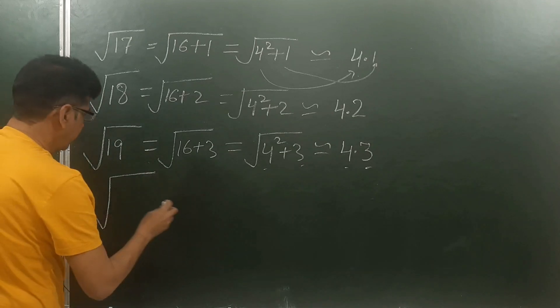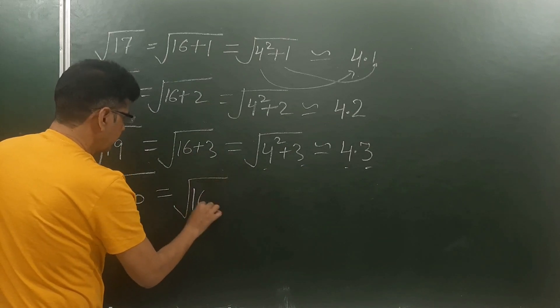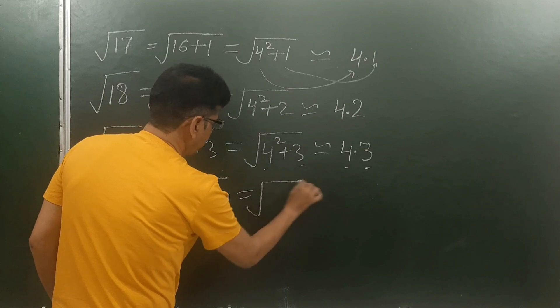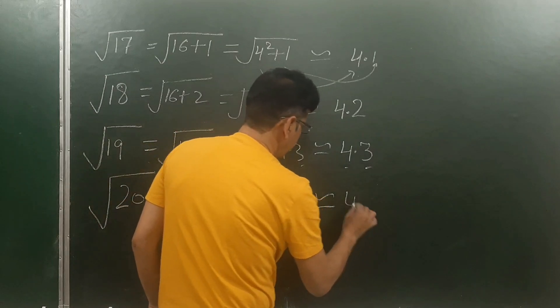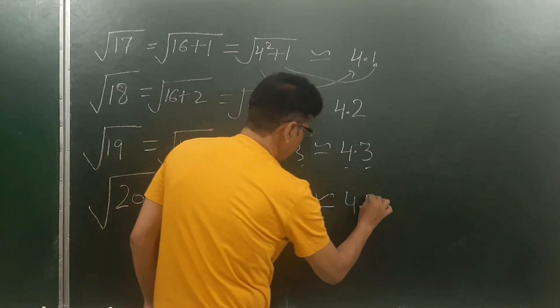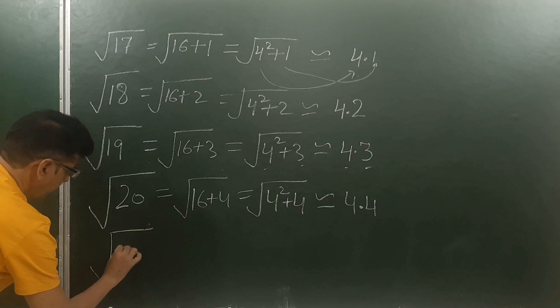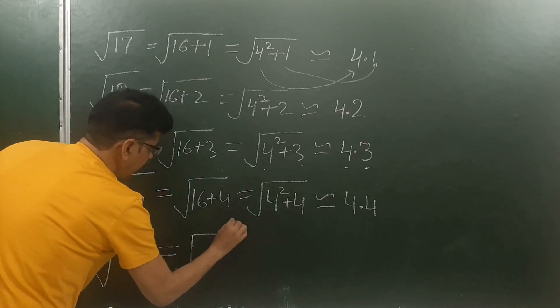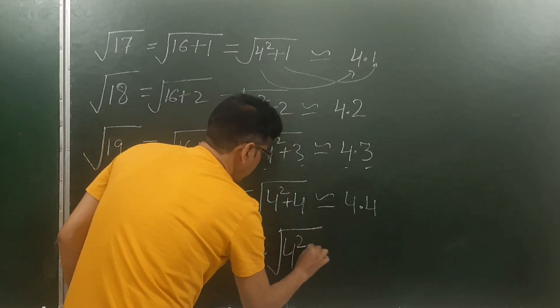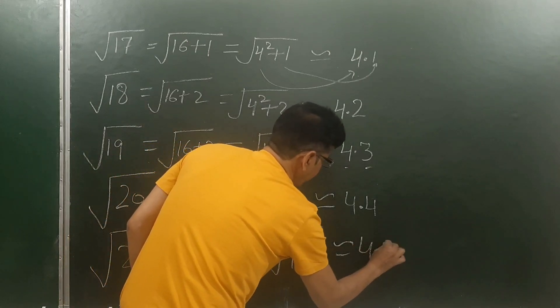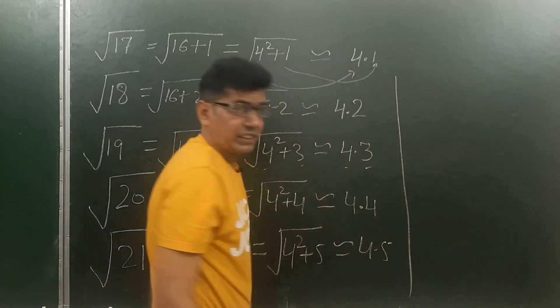Square root of 20 can be written as 16 + 4 = 4² + 4, approximately equal to 4.4. Square root of 21 can be written as 16 + 5 = 4² + 5, so 4.5. Are you ready to understand this?